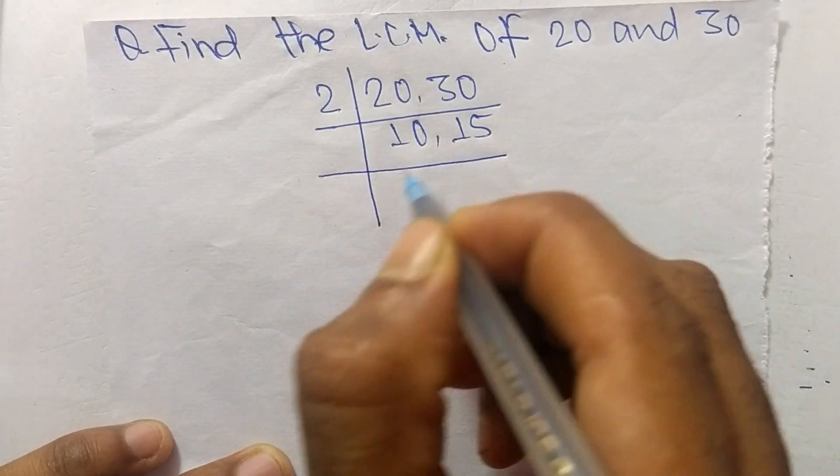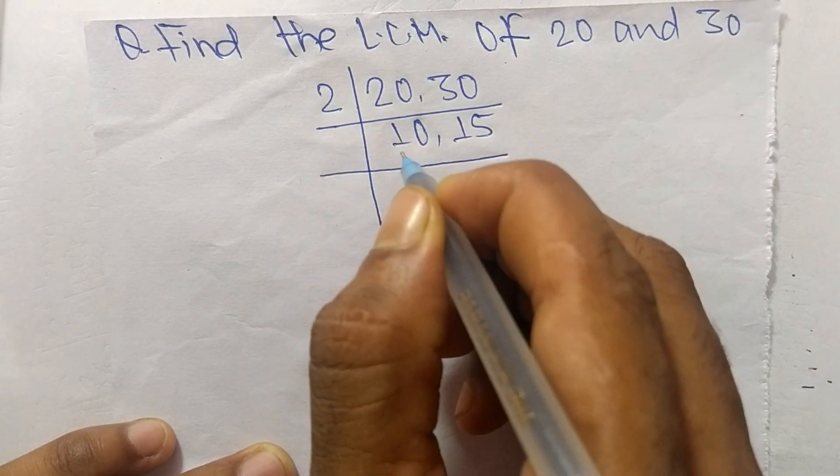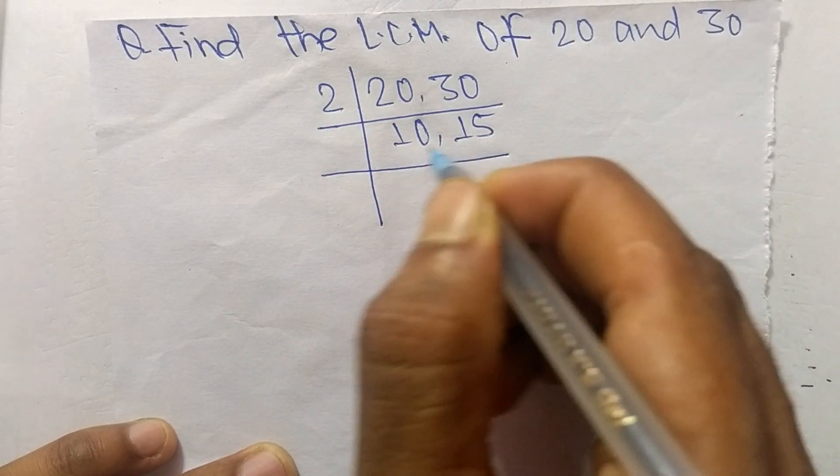can't divide both numbers exactly, so we choose the number greater than 2 that can exactly divide 10 and 15.